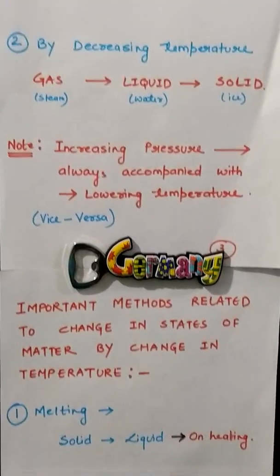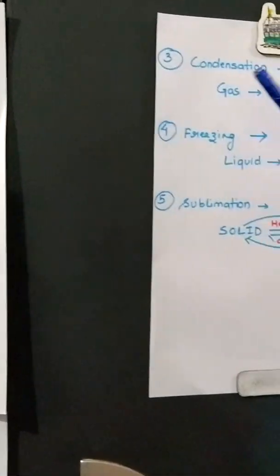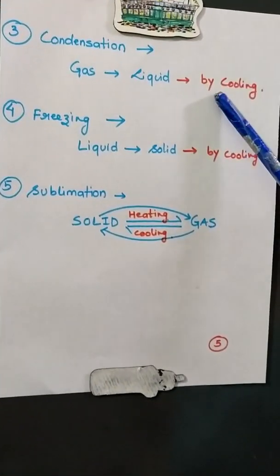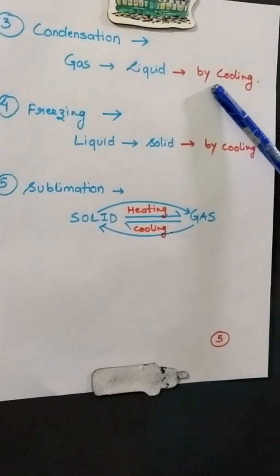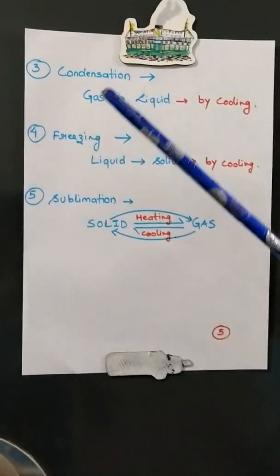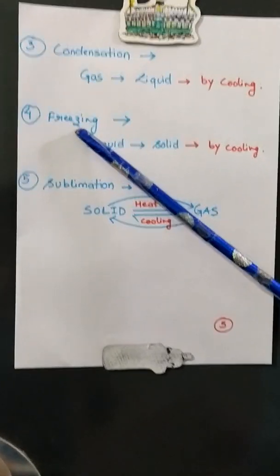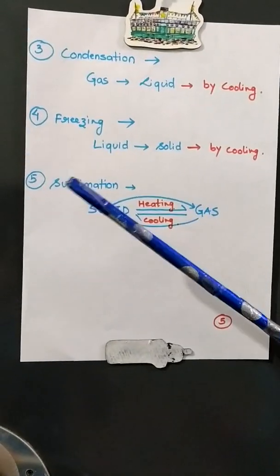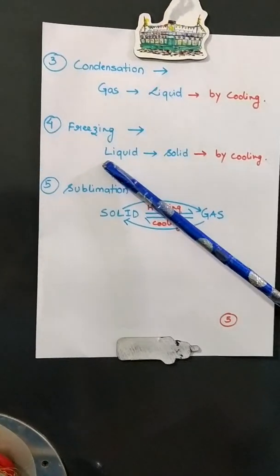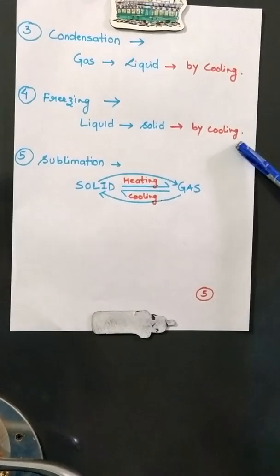The third method is condensation, which is the conversion of gas to liquid. This takes place when you cool it or decrease the temperature. The fourth process is freezing, which is the conversion of liquid state to solid state by cooling.